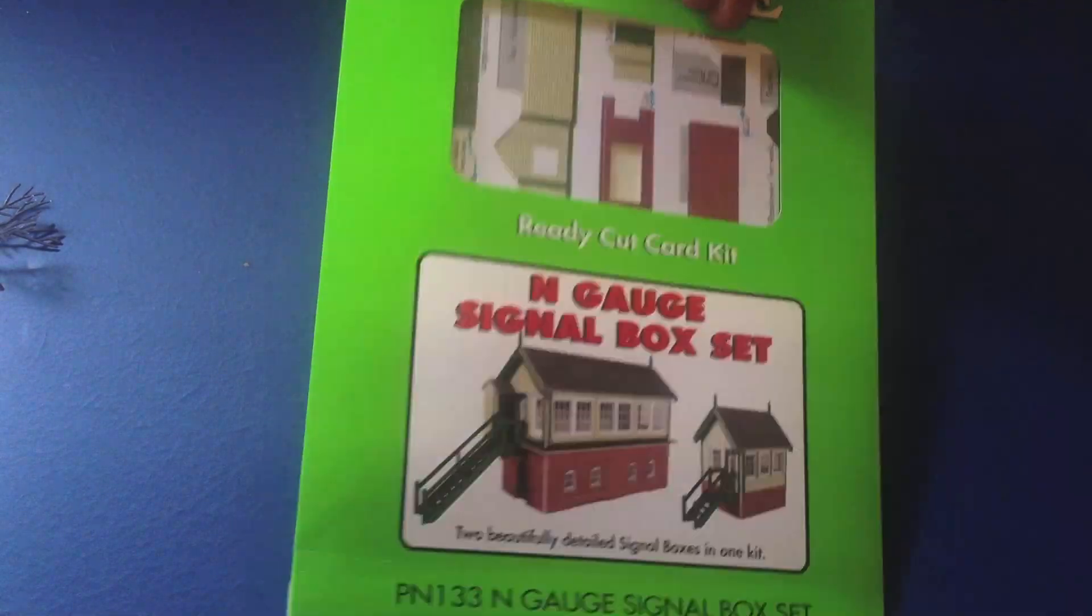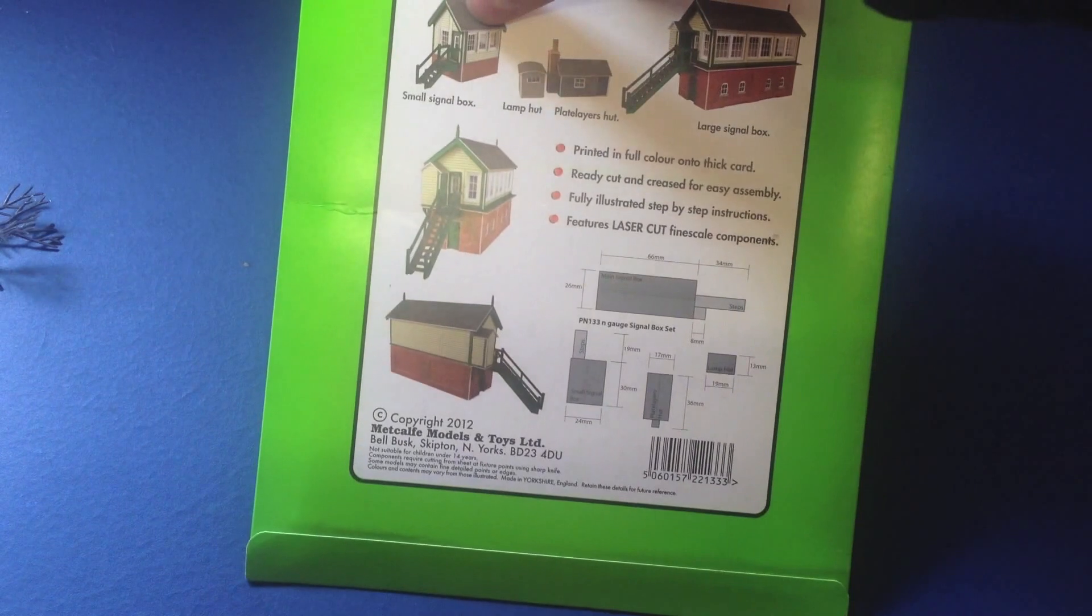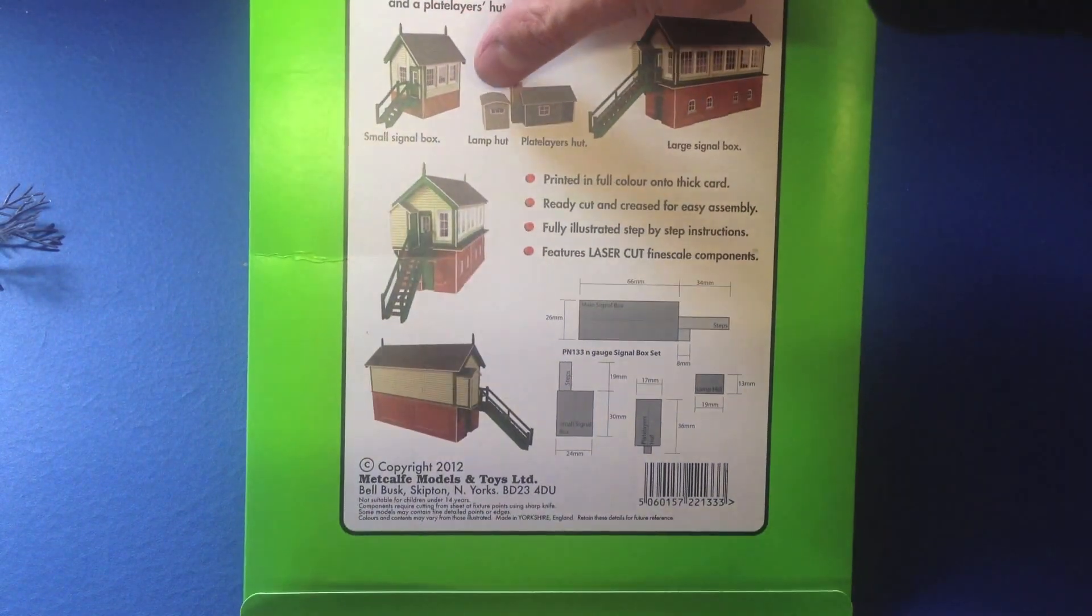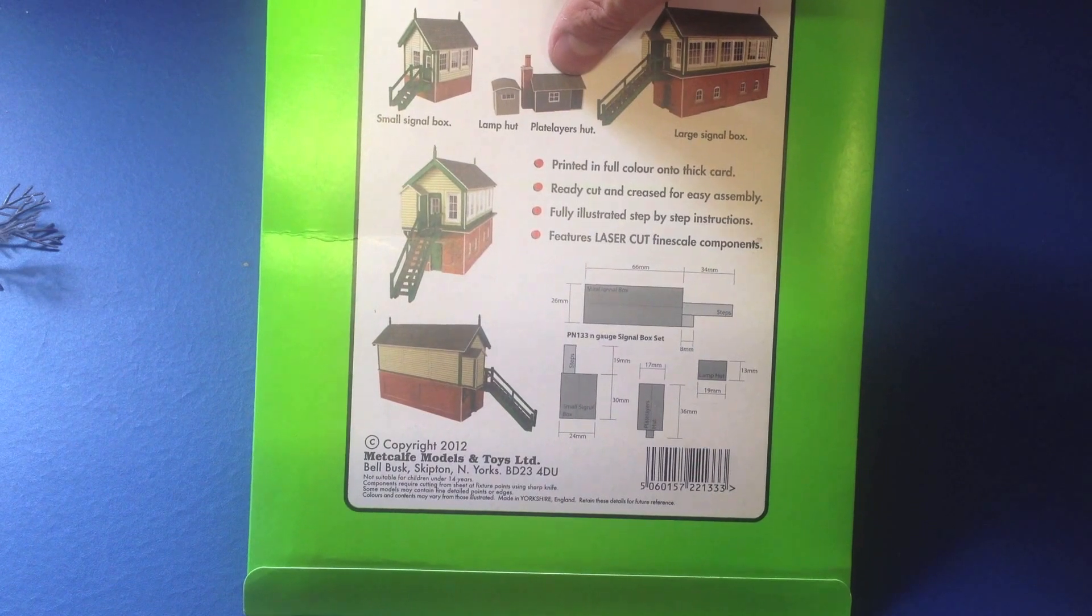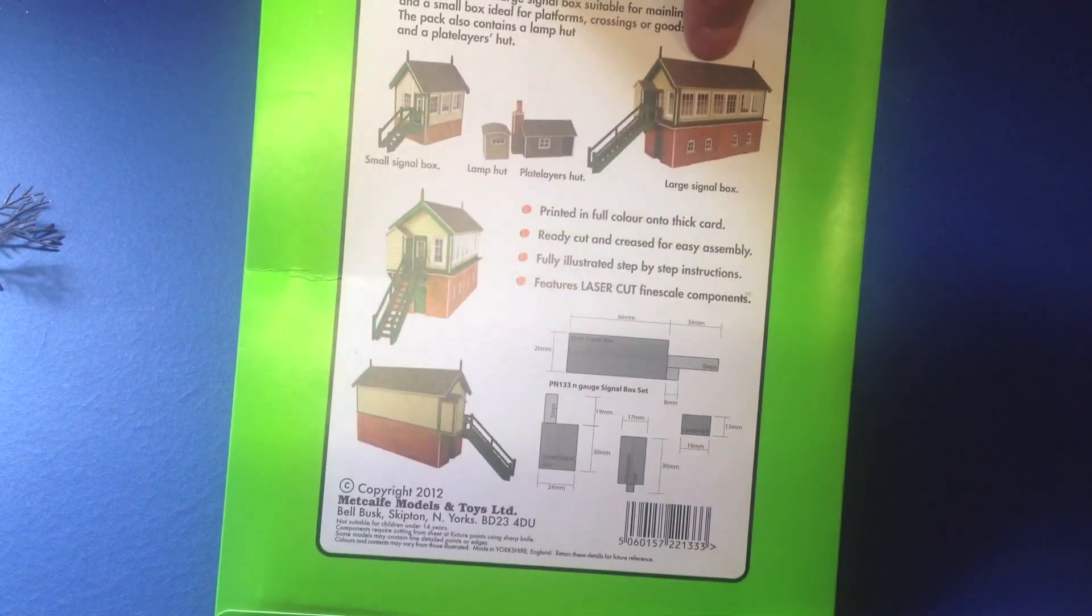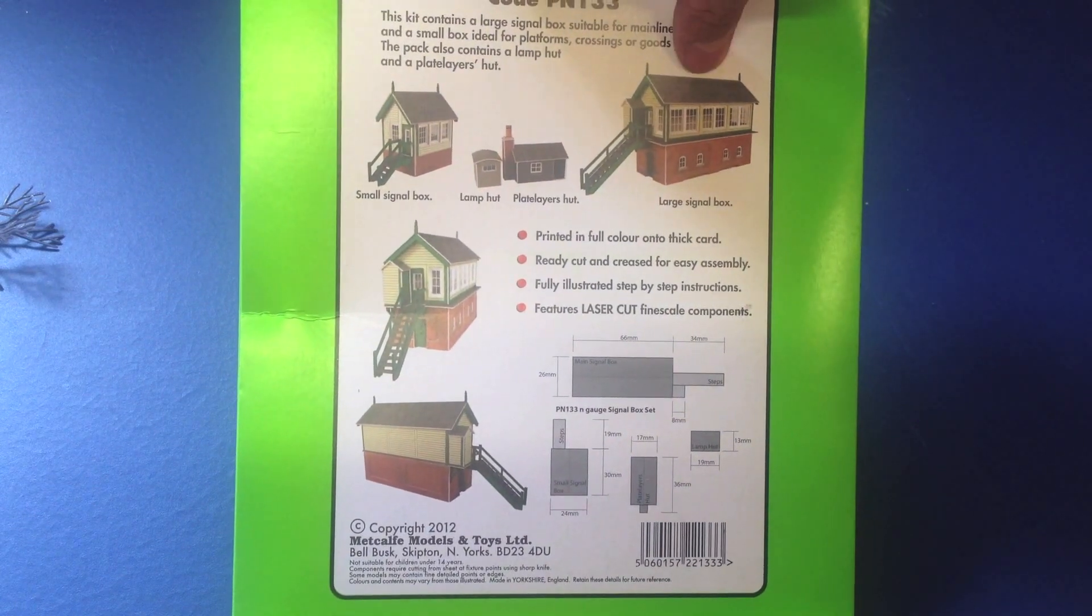Okay, if you have a look at the back you can see what we're going to get, which is the small signal box, a little hut, a lamp hut, a platelayers hut, and also the main event, the large signal box.